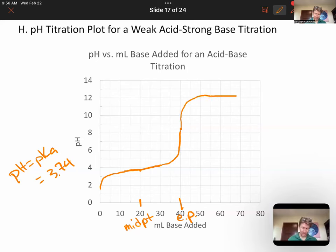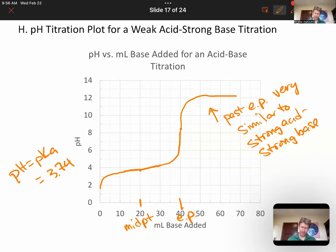And then on the other side, what you'll see is past the equivalence point, it looks very similar to a strong acid, strong base. And you'll see why, when you do this calculation. So really all you need in general, it helps if you have the initial pH, you have pH equals pKa at the midpoint. And you have to do the calculation at the equivalence point to figure out what the pH is. And beyond it, it sort of goes up here and flattens out.